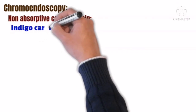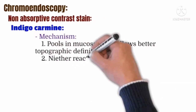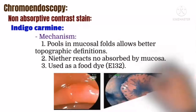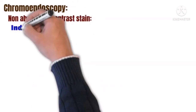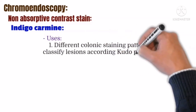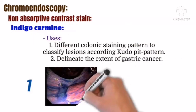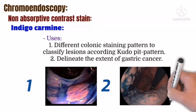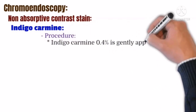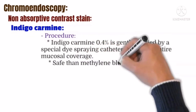The second group of chromoendoscopy stains is non-absorbative contrast stains, which include indigo carmine. Indigo carmine pools in the mucosal folds, allowing better topographic definition. It is neither reactive nor absorbed by the mucosa and is used as food dye E-132. It is used to detect different colonic pit staining patterns, to classify lesions according to the Kudo pit pattern, and to delineate the extent of gastric cancer. Indigo carmine is applied at 0.4% concentration using a special dye-spraying catheter for entire mucosal coverage, and it is safer than methylene blue as it does not affect DNA.